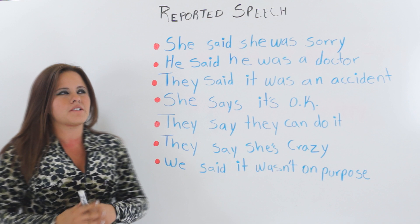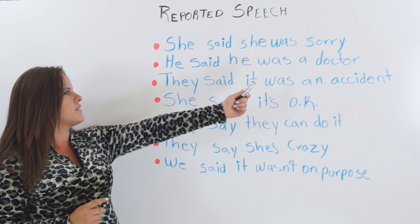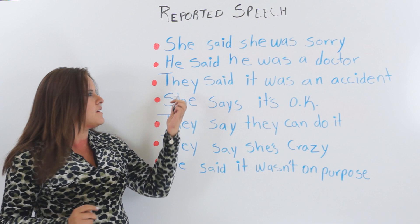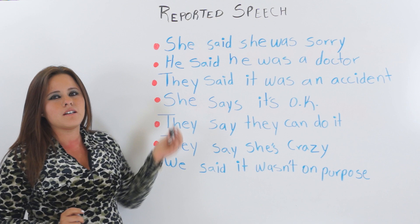For example: she said she was sorry, he said he was a doctor, they said it was an accident. She says it's okay. As you can see here, it doesn't always have to be in past — it can also be in present, and you can use any of these pronouns.